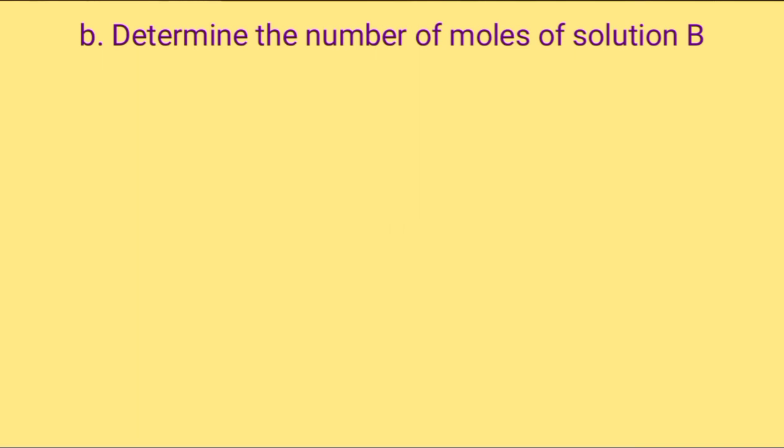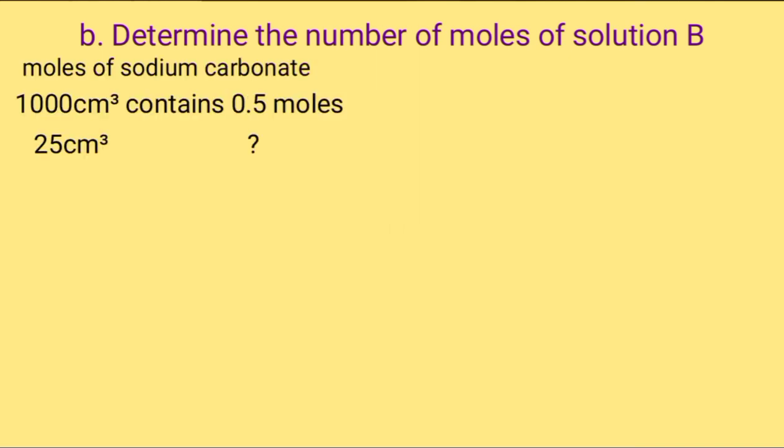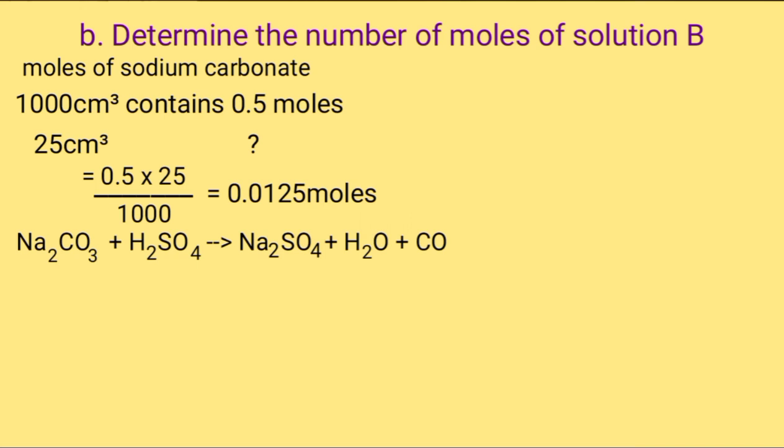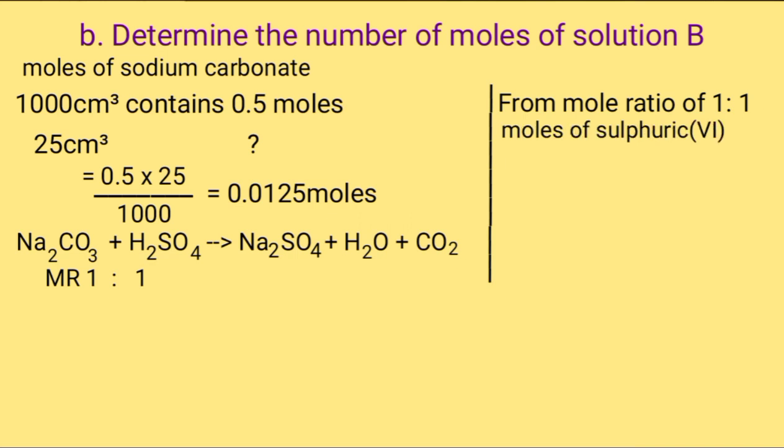Note that we have two types of volume: the pipette volume and the average titration volume. Therefore, number of moles of sodium carbonate is obtained by 1000 cm³ contains 0.5 moles. 0.5 moles is obtained from molarity, which is 0.5 molar. What about 20.03? Cross multiply, you get 0.0125 moles. Equation for the reaction: sodium carbonate plus sulfuric(VI) acid arrow sodium sulfate plus water. The equation is balanced, so mole ratio is 1 to 1. From the mole ratio of 1 to 1, the moles of sulfuric acid equals the number of moles of sodium carbonate, which is 0.0125.